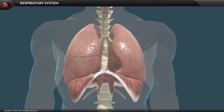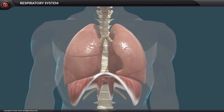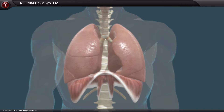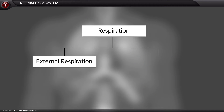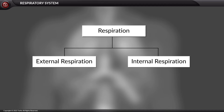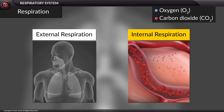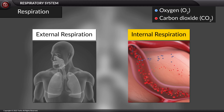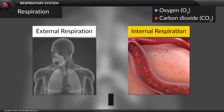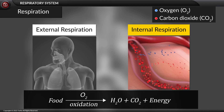In humans, respiration is divided into two parts: external respiration and internal respiration. External respiration, or breathing, consists of inhalation and exhalation with the exchange of gases. Internal respiration, or cellular respiration, involves the exchange of gases between the blood and cells in the body, and further oxidation of food to release energy.